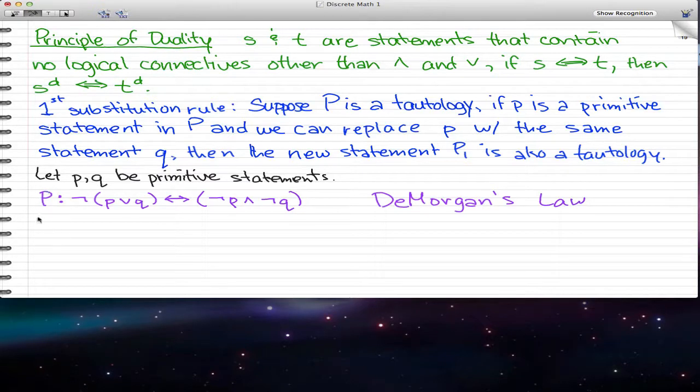So for example, P1, let's say that we want to replace, we're going to use our first substitution rule, and that first substitution rule replaces p, or little p, with r and s. So in this case, what really happens, let me just erase that, is we get the following statement.